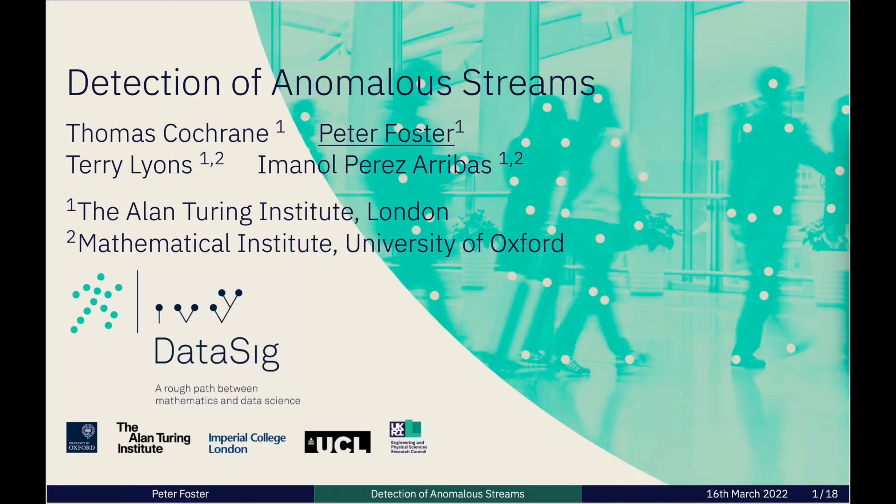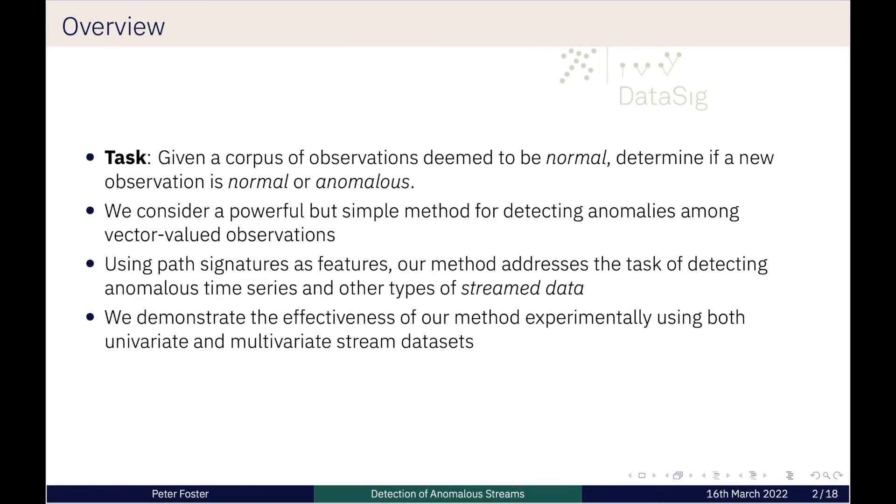I'd like to start by thanking the organisers, as well as my co-authors, Thomas Cochrane, Terry Lyons and Immanuel Perez-Arribas. The title of this talk is Detection of Anomalous Streams. By way of overview, the task that we're dealing with is as follows. Given a corpus of observations that we deem normal in some sense, we'd like to determine if a new observation is normal or anomalous.